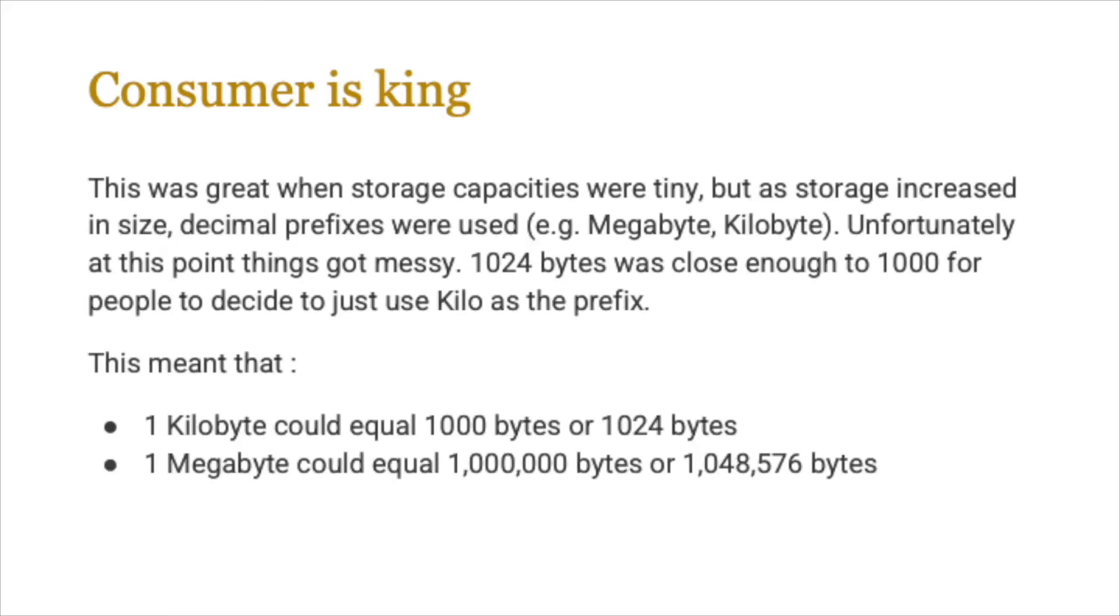Now why did this happen? Well it's because consumer is king, and this was all great when storage capacities were very tiny. In the old days we never used to worry about megabytes and gigabytes. People used to work with bits and bytes, and storage capacities were so tiny that decimal prefixes seemed normal. But as storage increased in size, that caused a bit of a problem. However, still 1024 bytes was close enough to a thousand bytes that we could get away with things, but as memory capacity and storage capacities increased, things started to become difficult for both software developers and manufacturers themselves.